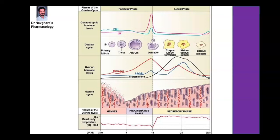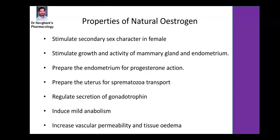This was a general description of the female menstrual cycle, in which two main hormones are secreted — estrogen and progesterone. Natural properties of estrogen: estrogen stimulates secondary sex characters in females. It also stimulates and increases the activity of the mammary gland along with the endometrium. Estrogen prepares the endometrium for progesterone action, prepares the uterus for transport of spermatozoa, and regulates secretion of gonadotropins. It also induces mild anabolic effects and increases vascular permeability and tissue edema.